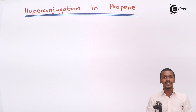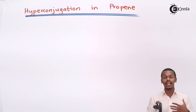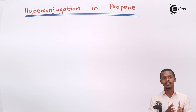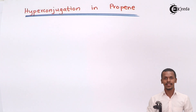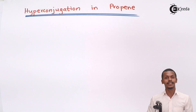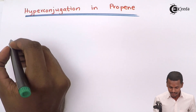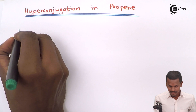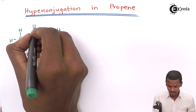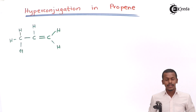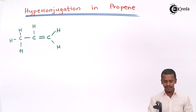So let us represent the structure of propene, and after that we can easily determine how to represent the hyperconjugation of propene. So let us draw the structure of propene.